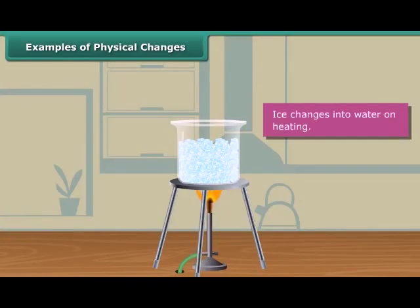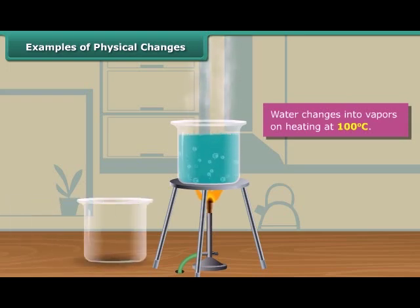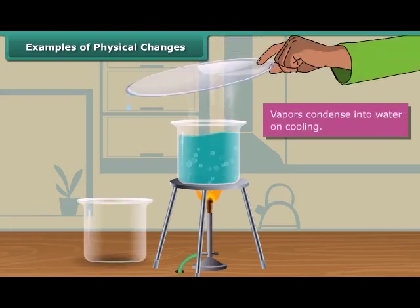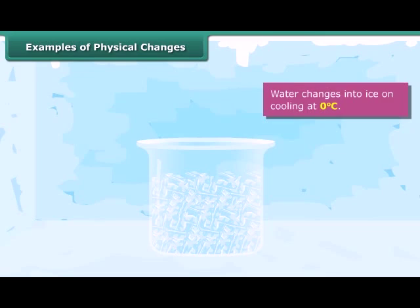On heating, ice changes into water. When this water is heated to 100 degrees Celsius, it changes to vapors. These vapors on cooling change back to water, and when this water is cooled to 0 degrees Celsius, it converts back to ice. So in the whole process, water changes only its state, and the chemical composition of water remains the same.